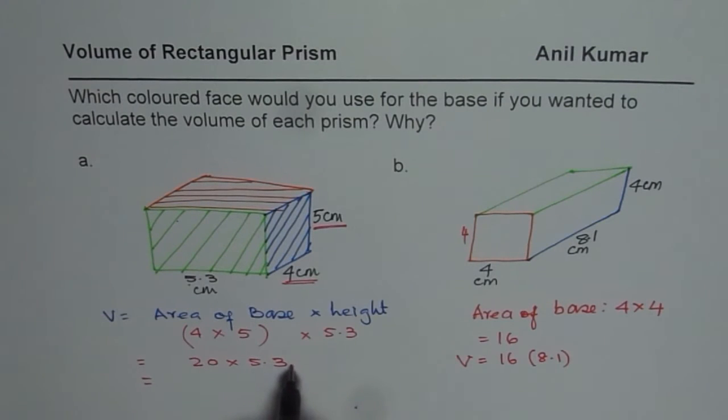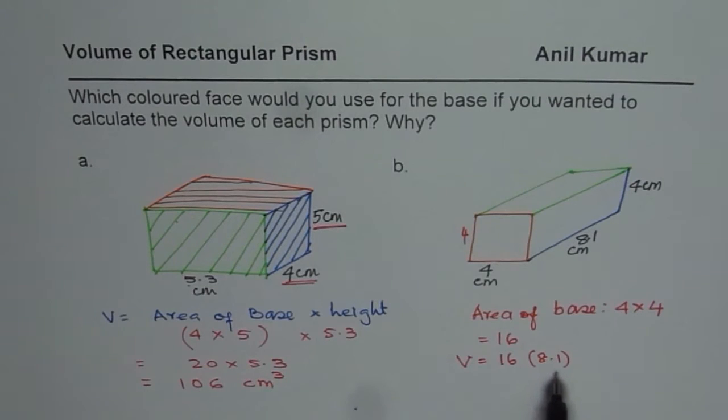Now, 0 will make it 53 multiplied by 2. So 2 times 3 is 6. 2 times 5 is 10. So 106 centimeter cube is your answer. So that is how it becomes kind of simpler to multiply and get your answer.